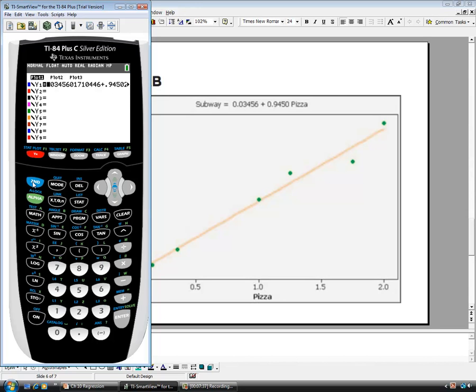But to get to the stat plots and actually plot the data, we hit the second key and then the y key, and we get the stat plots. We only want to turn one of them on. I've got them in the first one. So we need to turn it on and turn the rest of the plots off to make sure that you don't have any overlap or errors. And our very first option, this little dotted line here, stands for a scatter plot.